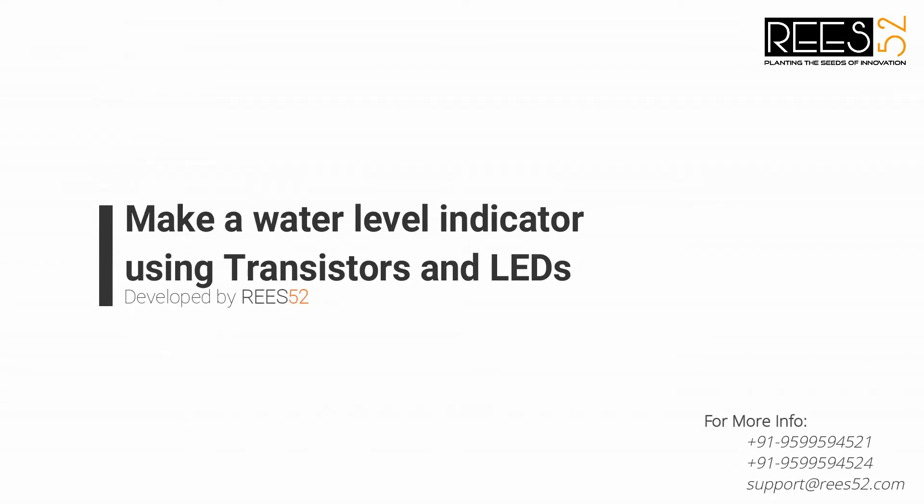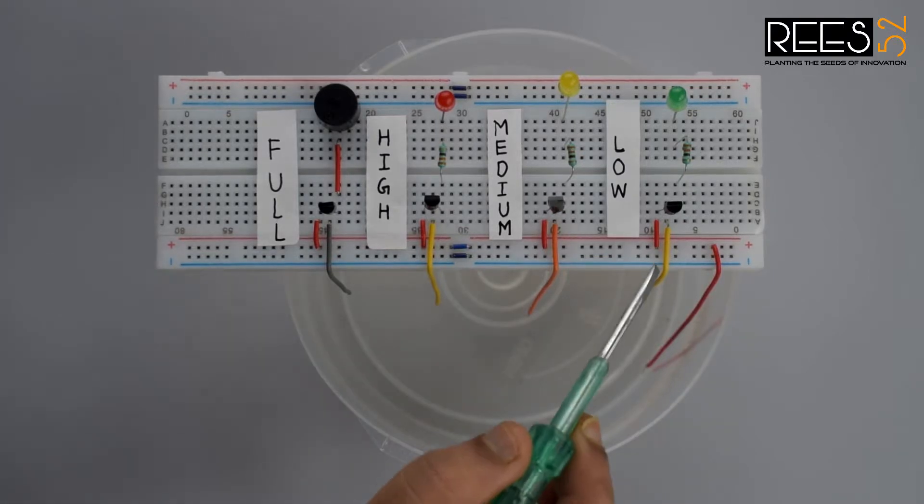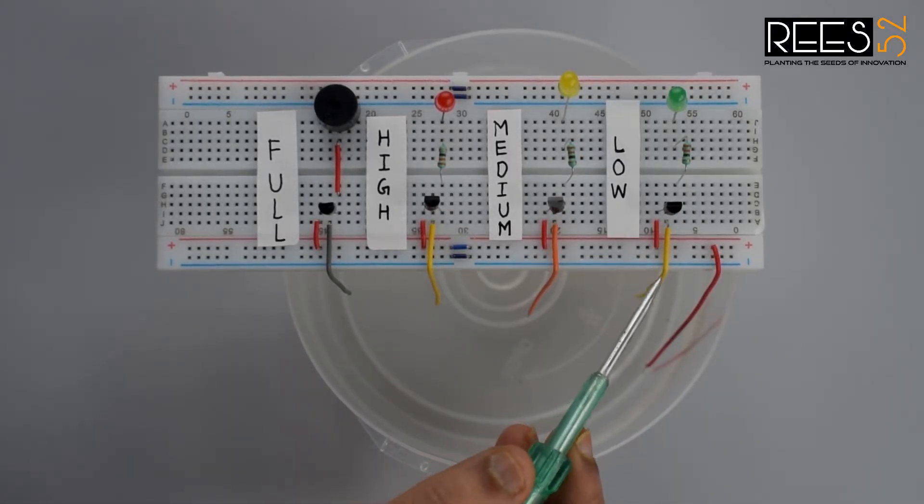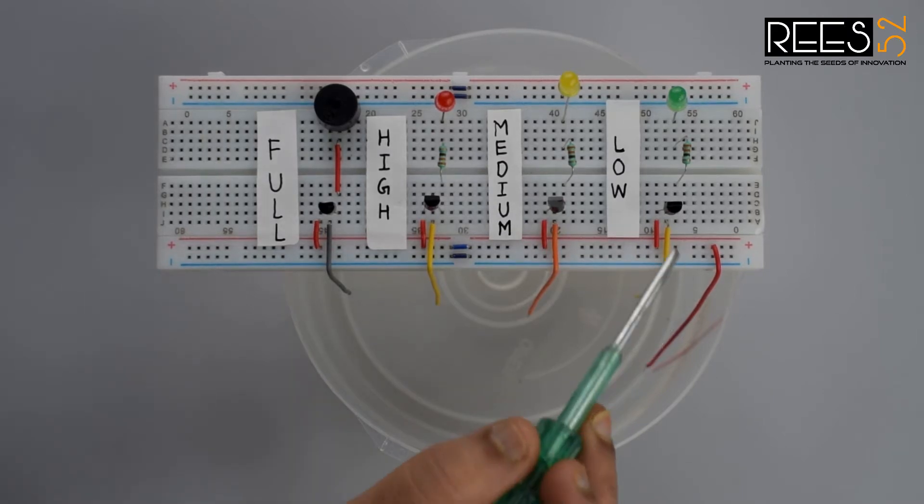Hello everyone, welcome to our channel Reeds52.com. So let's talk about our today's tutorial. Generally the water stored in overhead tank is wasted due to overflow when the tank is full, so this water tank overflow is a common problem.